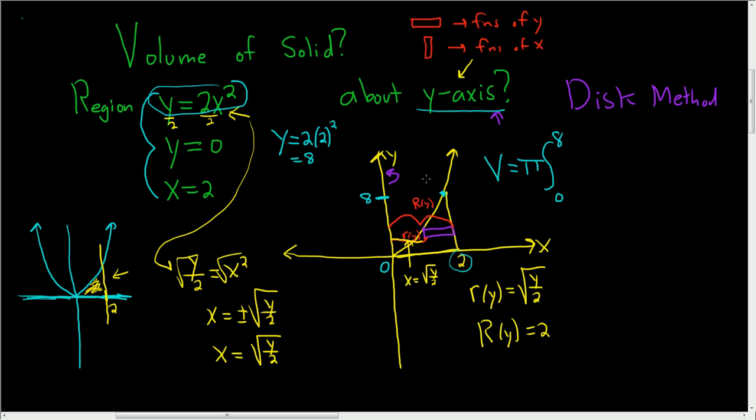And then we take big R of y and we square it, so 2 squared because big R of y was 2. Then we subtract and we take the square root of y over 2 and we square it. And we put all of this in parentheses, and this is dy.